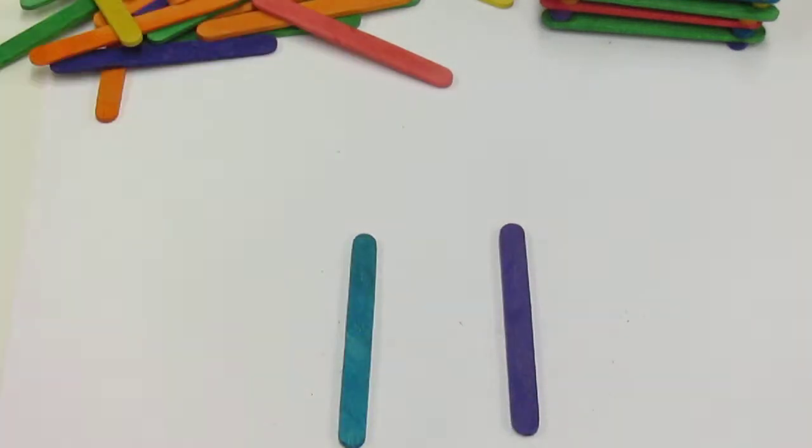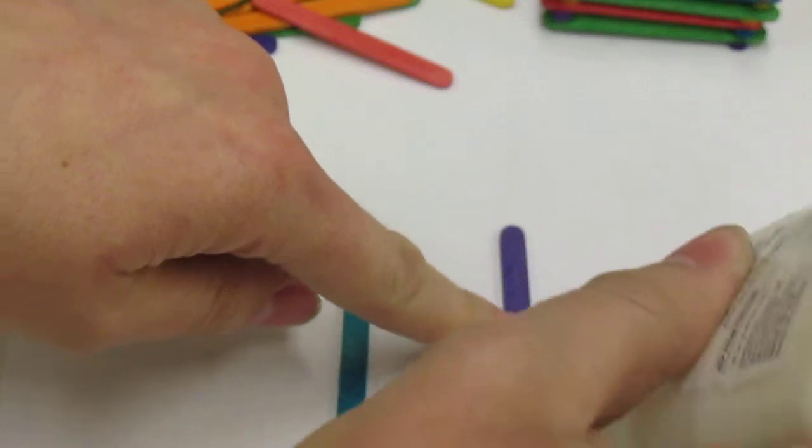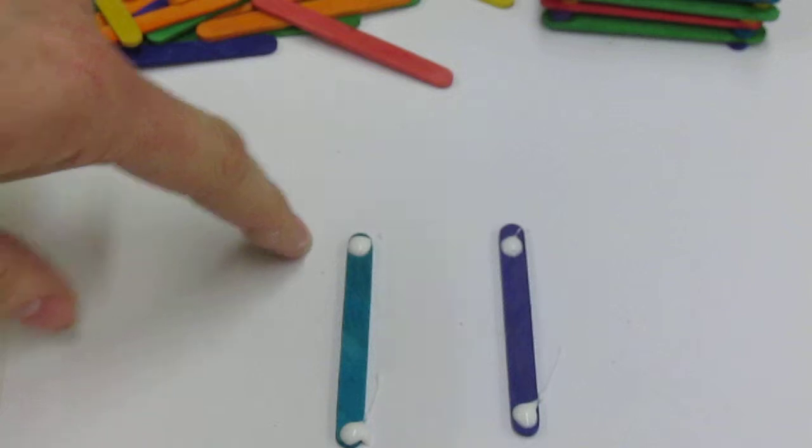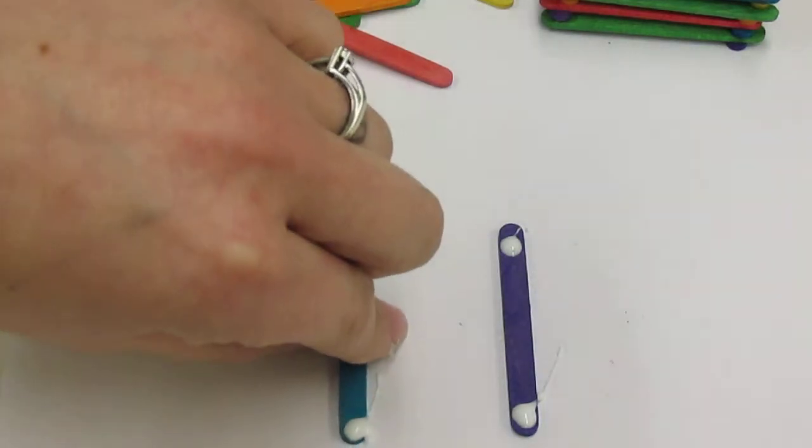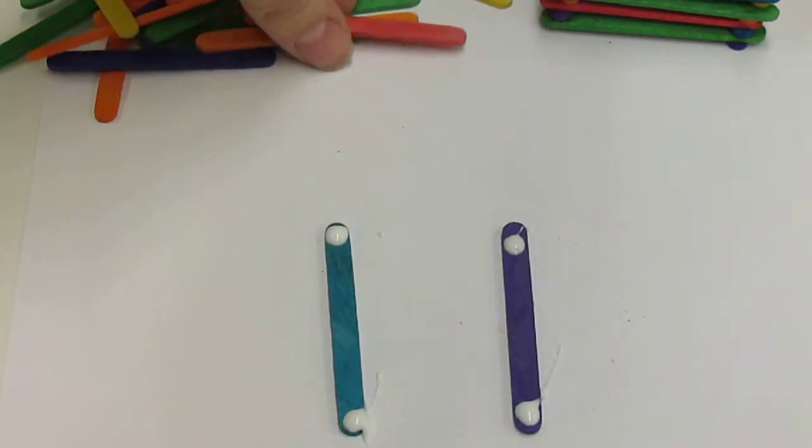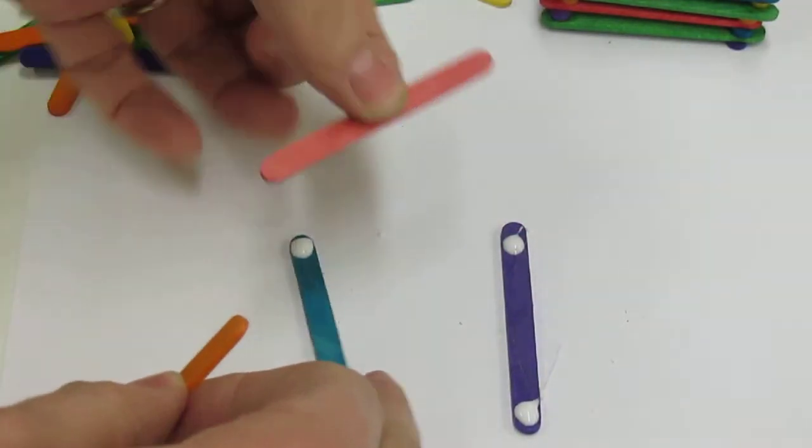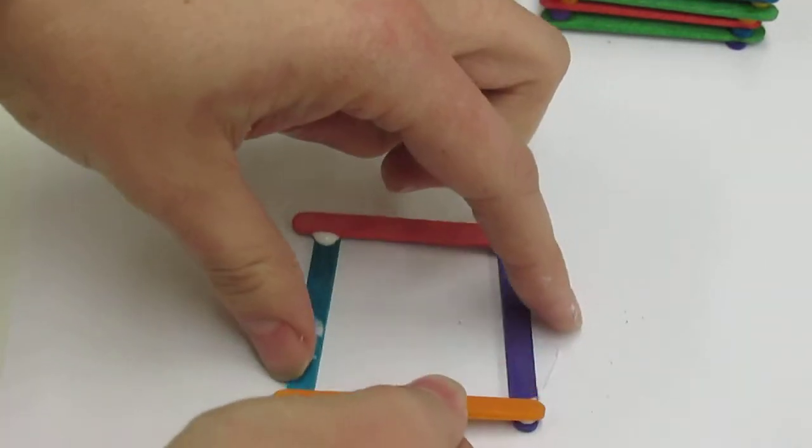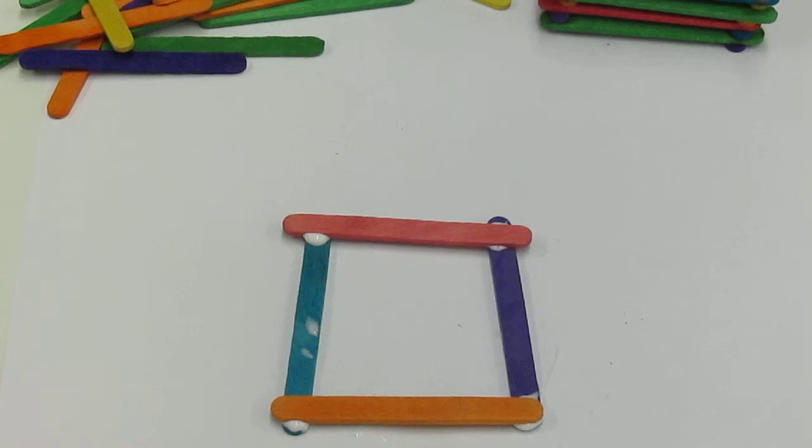The next step is to put four dots on each stick. Excuse me, four dots all together. Each stick gets two. Okay, so I have my two sticks and four dots: one, two, three, four. Now these are the sides of my house, so now I need to pick two sticks to be the top and bottom of my house and they're going to go right on those glue dots. Now what shape is that? You should say square.